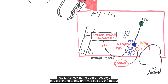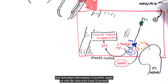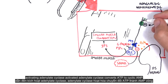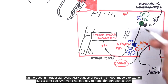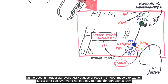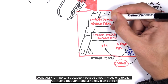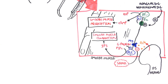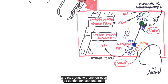For the beta-2 receptors, adrenaline and noradrenaline from sympathetic stimulation bind to this receptor and activate a G protein, activating adenylate cyclase. Activated adenylate cyclase converts ATP to cyclic AMP. An increase in intracellular cyclic AMP results in smooth muscle relaxation — and this is beneficial for obstructive lung diseases. Prescribing short-acting beta-2 agonists stimulates the beta-2 receptors and thus leads to bronchodilation.